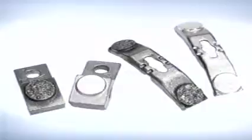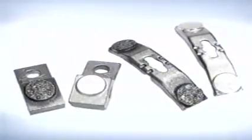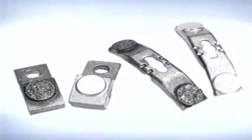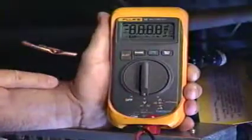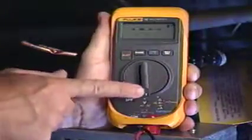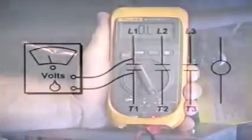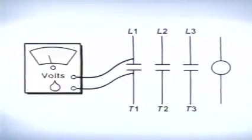The contactor contacts should be smooth. A visual inspection can be done to check the condition of the contacts. Contacts can also be checked with either a voltmeter or an ohmmeter. When checking the contacts with a voltmeter, the test leads of the meter should be placed across the contacts, as shown here.